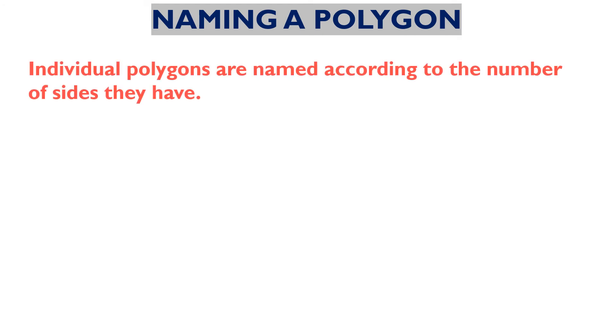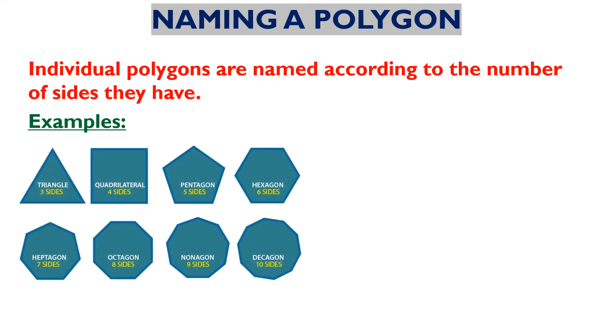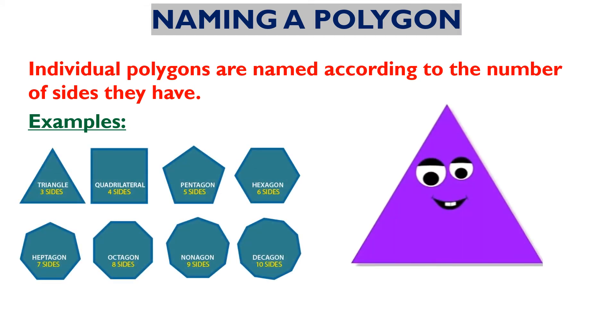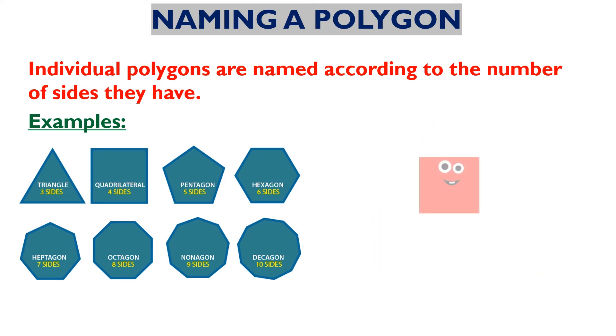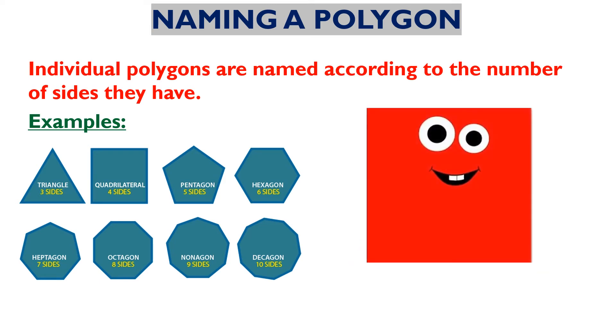Now, naming a polygon. It is very interesting to know about naming a polygon. Individual polygons are named according to the number of sides they have. Examples: First, we have triangle which has three sides and three vertices. Then quadrilaterals with four sides and four vertices.